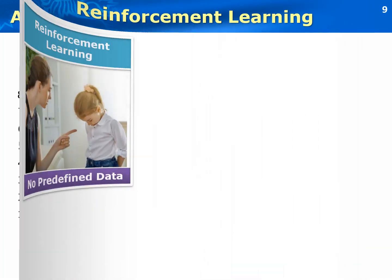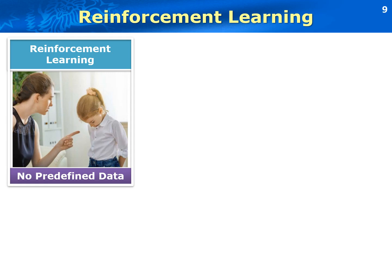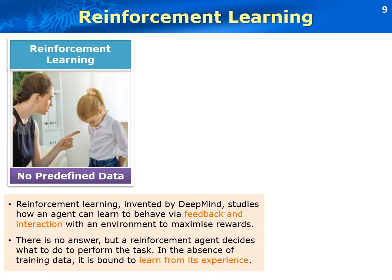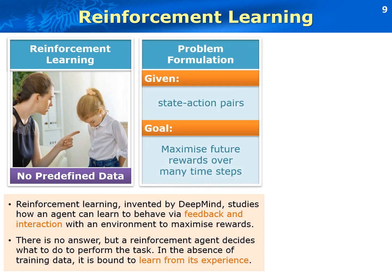The third learning model is reinforcement learning. Reinforcement learning is invented by DeepMind, which is a London-based company. It studies how an agent can learn to behave through feedback and interaction with an environment to maximize rewards and minimize punishments. In reinforcement learning, there are no predefined data, no answers. This is different from supervised learning, whose training is based on labeled data. A reinforcement agent will decide what to do to perform the task well. In the absence of training data, reinforcement learning learns from its experience. The problem of reinforcement learning can be formulated as follows: given state-action pairs, the goal is to perform the task well by maximizing future rewards over many time steps.